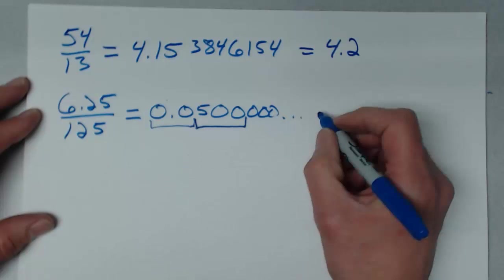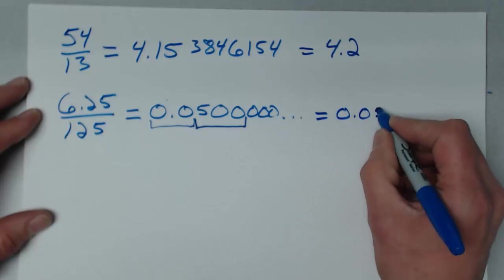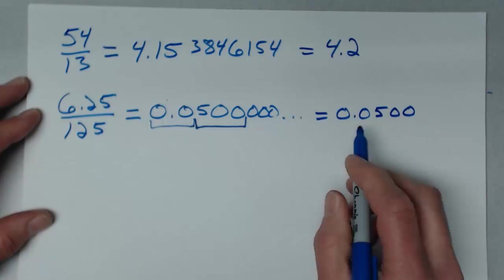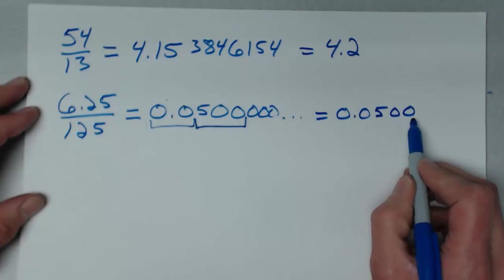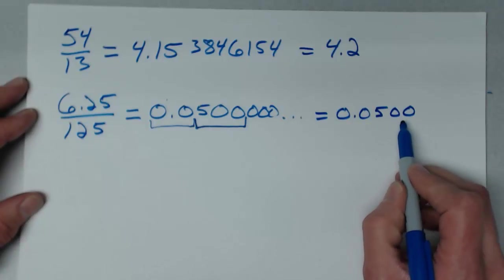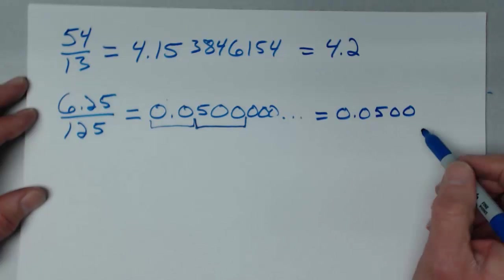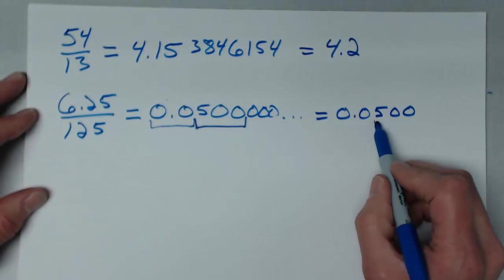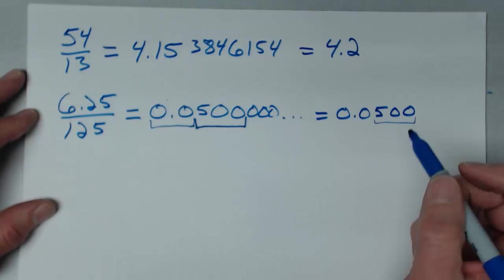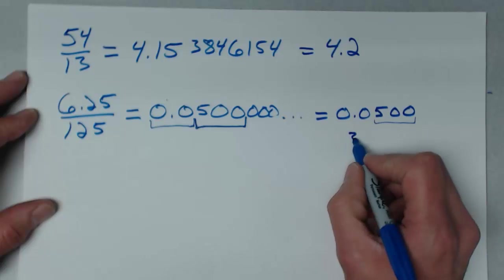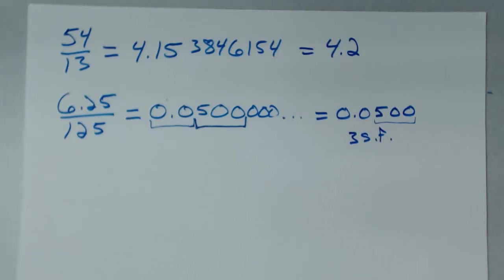So I would write it as 0.0500. The first two zeros are not significant figures. The 5, and the two trailing zeros are significant — they're to the right of a non-zero digit after a decimal place. So here are the significant digits in this problem, and it ends up with three significant figures.